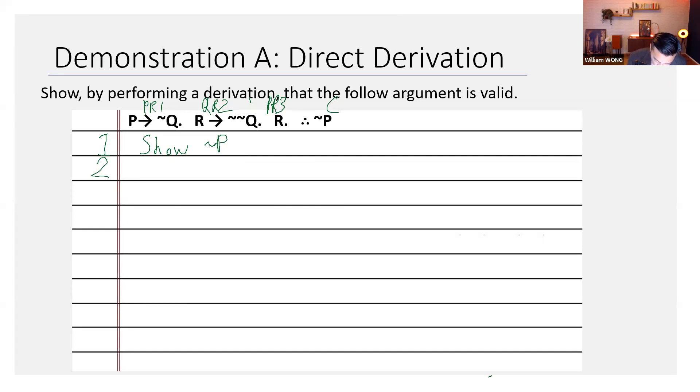So, you might say, okay, looking at premise one, P entails not Q. And then looking at premise two, it says R entails not, not Q. And looking at premise three, it says R.